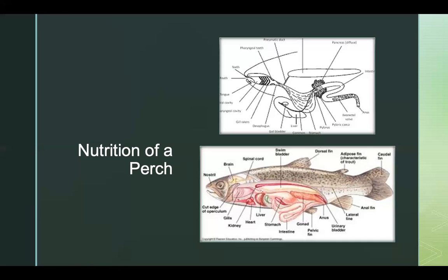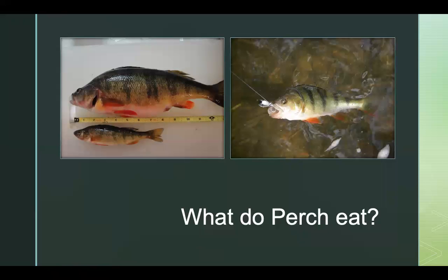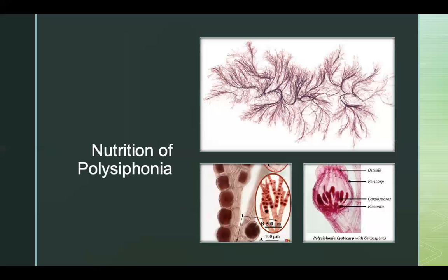Excess food and feces are passed out of the fish's body through the rectum and anus, similar to a human. The perch's diet is largely mandated by their environment. Between August and January they eat insects and worms, and between February and June they eat other fish. This is because perch are commonly hunted, so during fishing season they get food from fishermen, while in the off-season they rely on their own hunting skills.